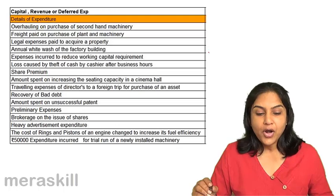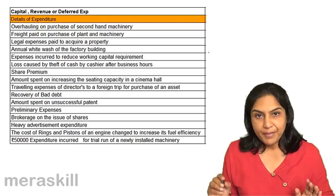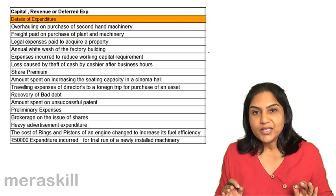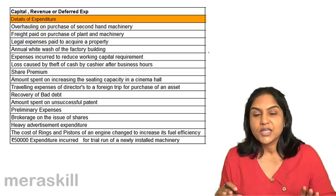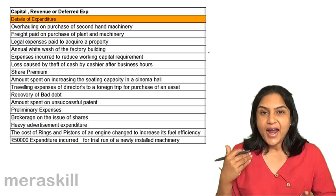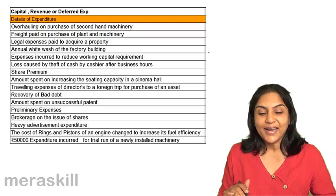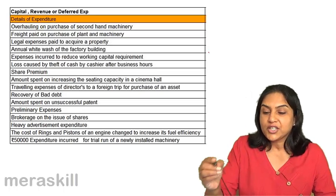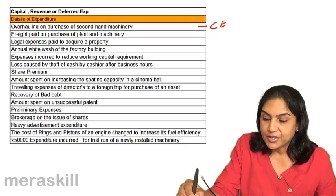Overhauling on purchase of second-hand machinery. When we buy any asset, all the costs incurred up to its installation, till it starts functioning, are supposed to be capitalized — they are capital expenditure, added to the cost of the asset. Here we have bought a second-hand machinery and then overhauled it. Therefore, all such costs would be treated as capital expenditure.